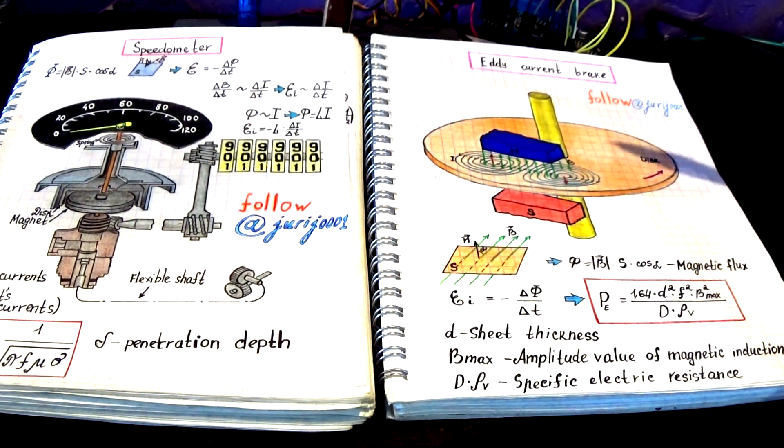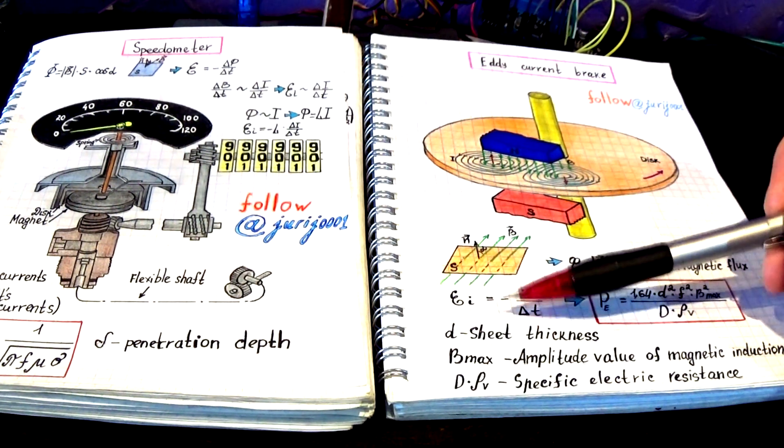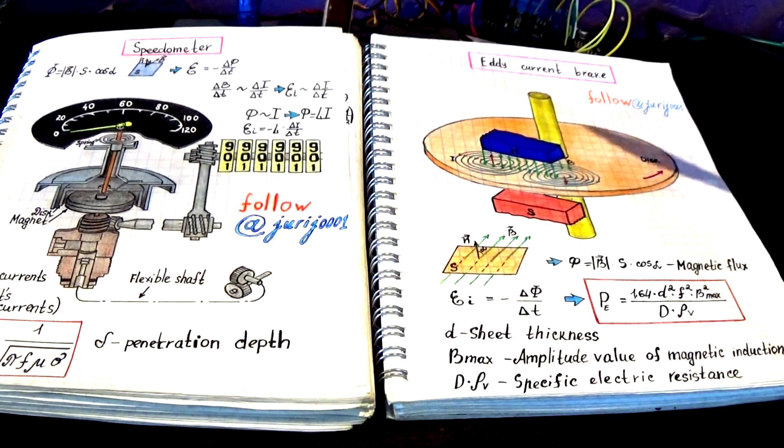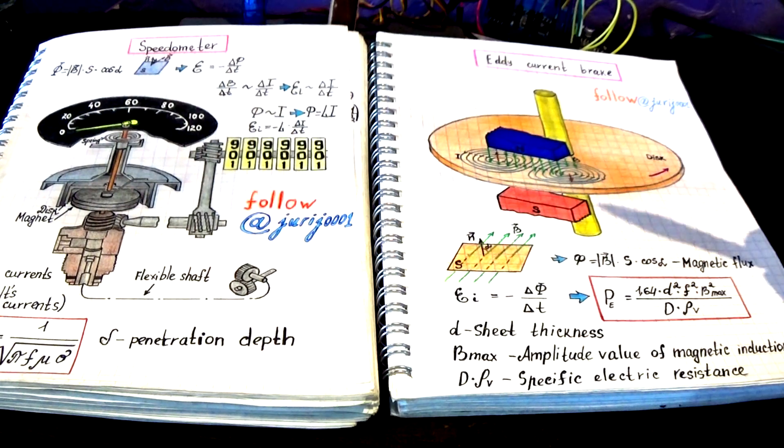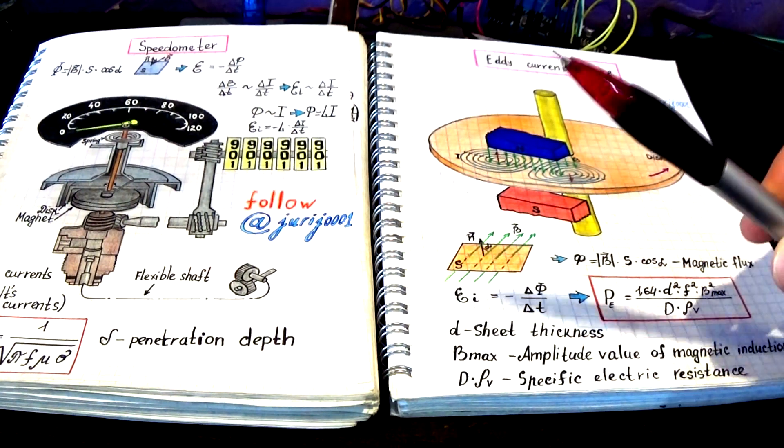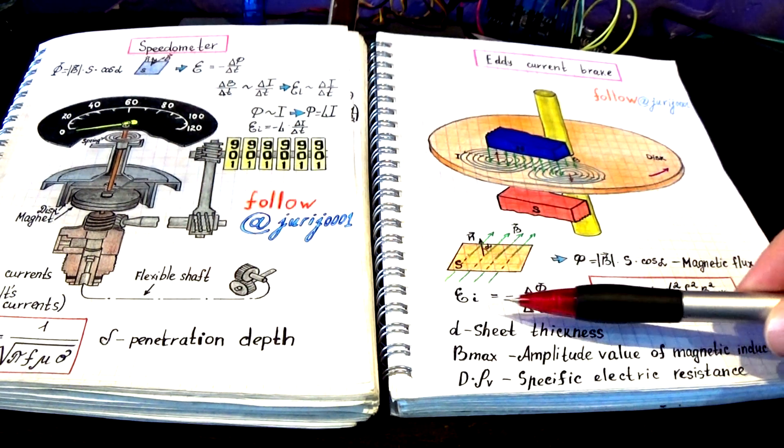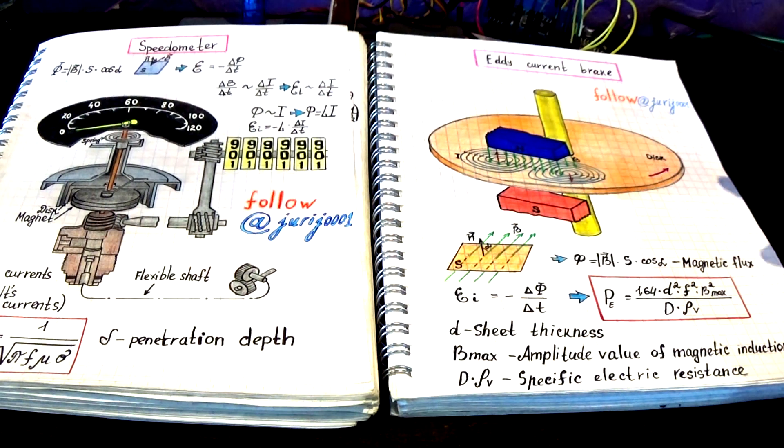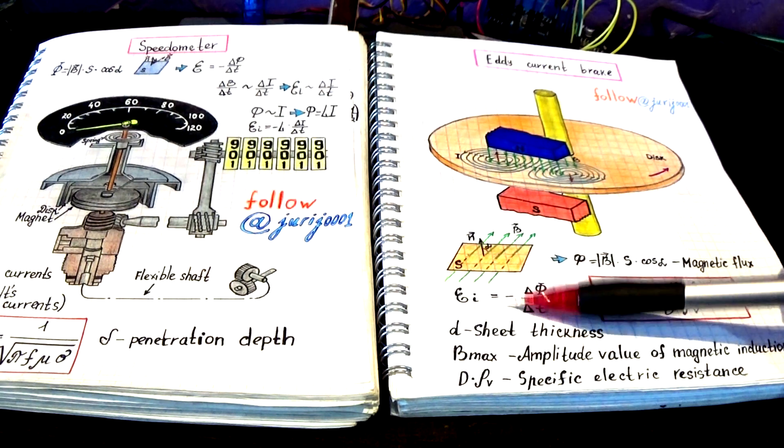It all starts with Faraday's law. This is called the law of electromagnetic induction. An electric current occurs in a conducting circuit when the magnetic flux changes, and it's also very important to understand the fact that the induction current and its magnetic field will interfere with the reason for which it was caused. This is expressed by a minus sign at this point.